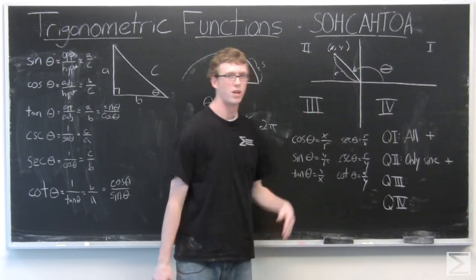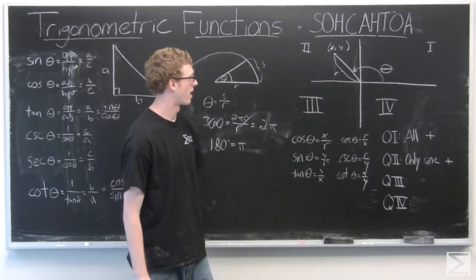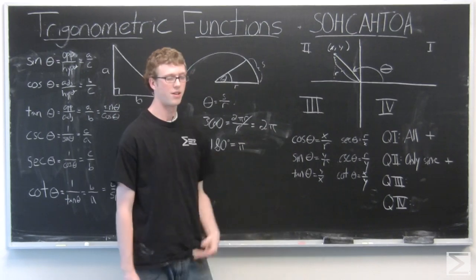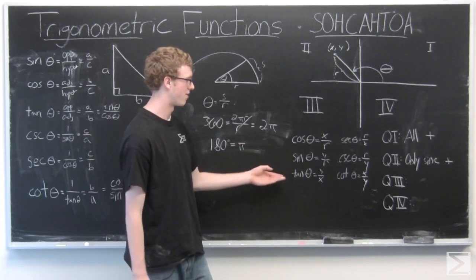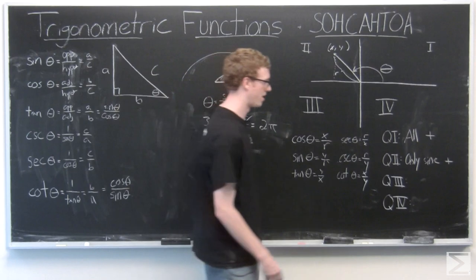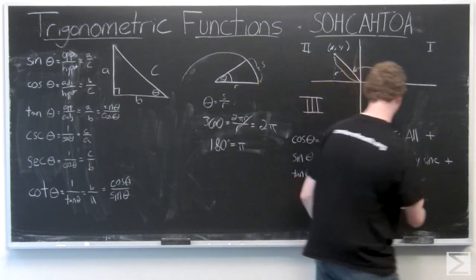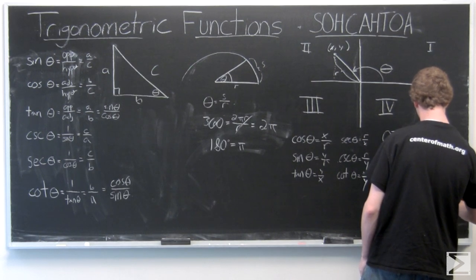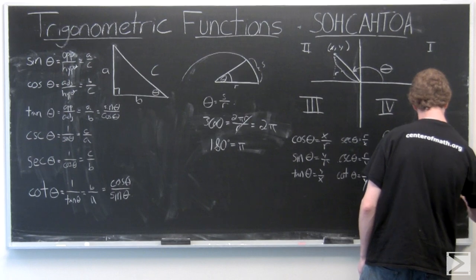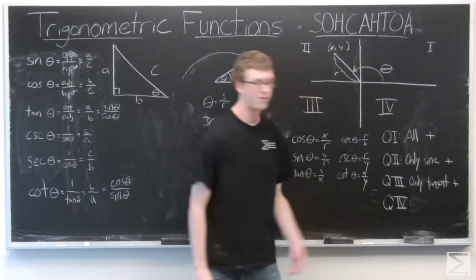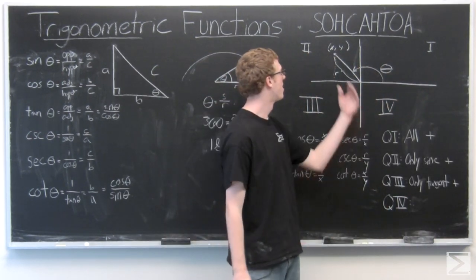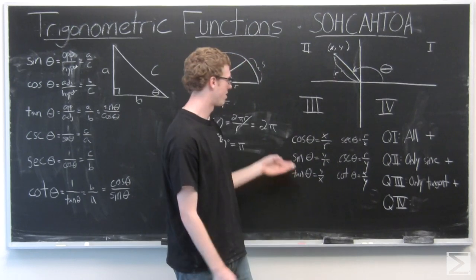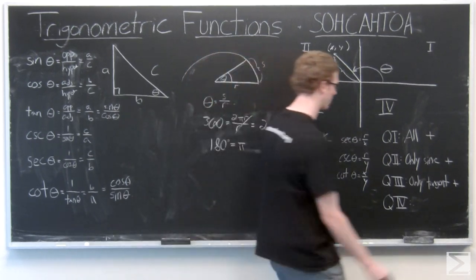In quadrant three, we're going to have both negative x and y coordinates, but tangent of theta is going to stay positive because we have a negative divided by a negative. The other two will be negatives. And then in the final quadrant, we have a positive x, but a negative y. So tangent and sine are both going to be negative, but cosine is still going to be positive.